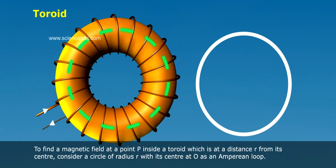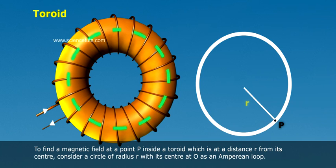To find a magnetic field at a point P inside a toroid which is at a distance R from its center, consider a circle of radius R with its center at O as an Amperian loop.